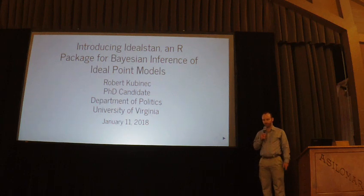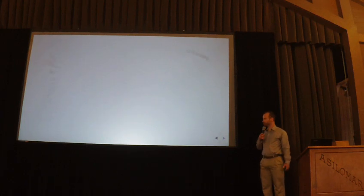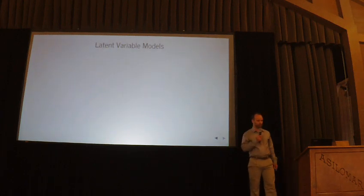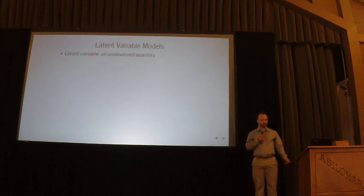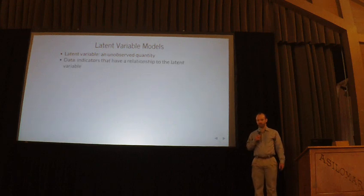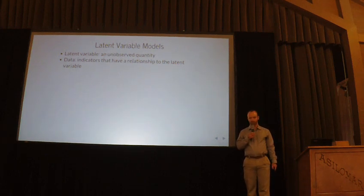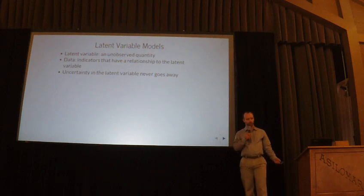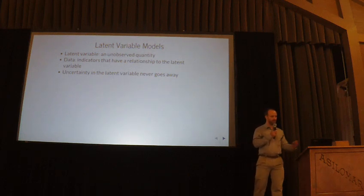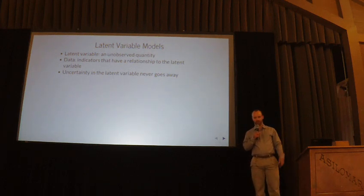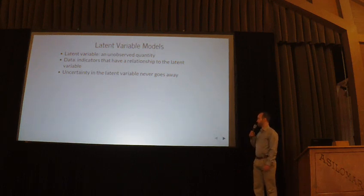The paper has a lot more of the math behind it. This is a latent variable model, and you've been hearing tons about this. You have an unobserved quantity that you want to know about, and your data tells you something about the latent variable. The data are essentially indicators that have some relationship to the latent variable. But the reason it's a latent variable is because the uncertainty never goes away — we never are able to observe what this latent concept is. These models are really popular in social science, primarily because our data really sucks.